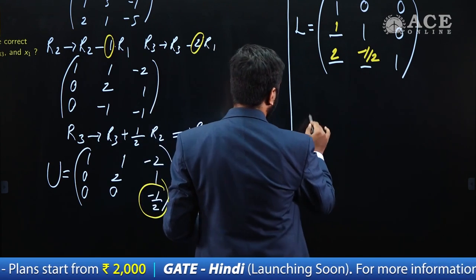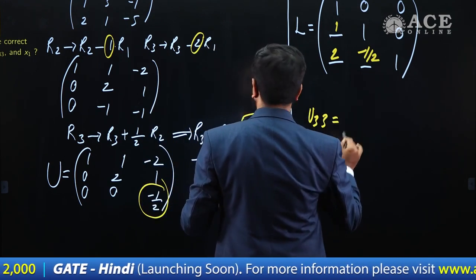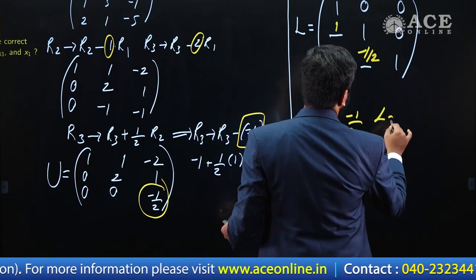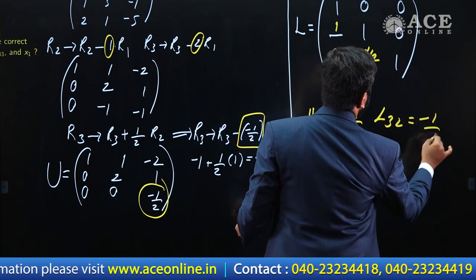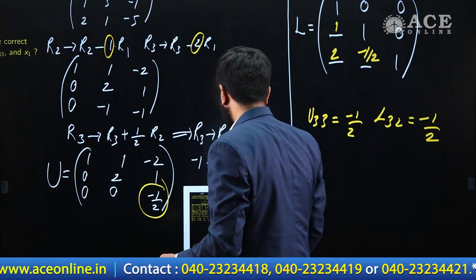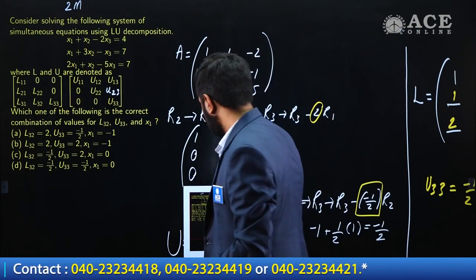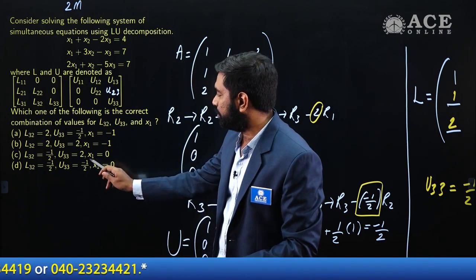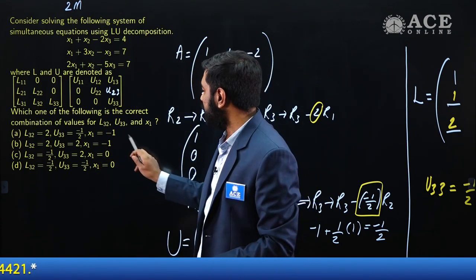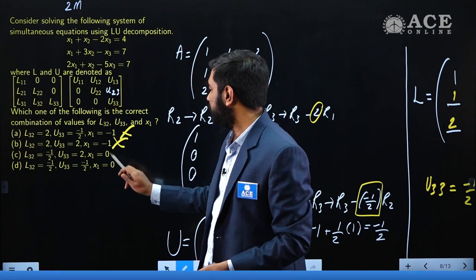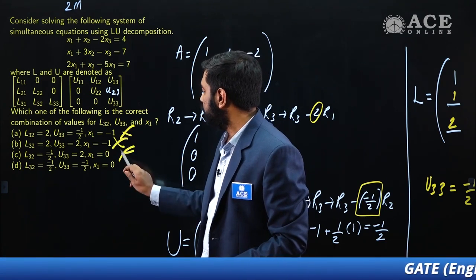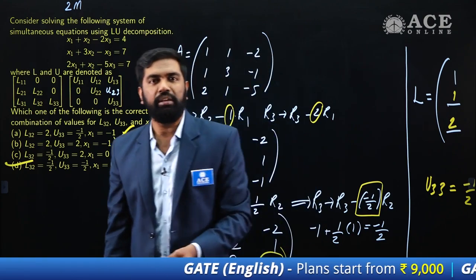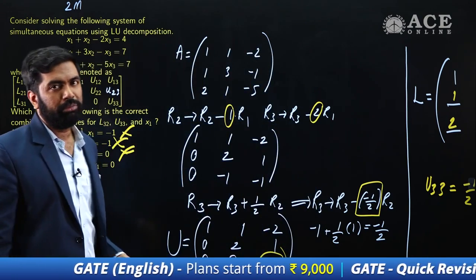We are done with this two-mark question. U₃₃ = −1/2 and L₃₂ = −1/2. Looking at the options, is there an option with L₃₂ = −1/2 and U₃₃ = −1/2? Through elimination, the answer for this question is option D.